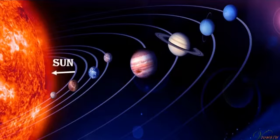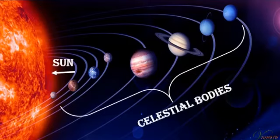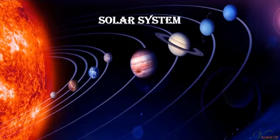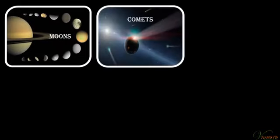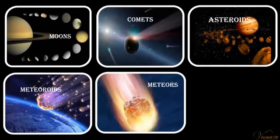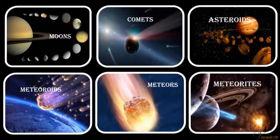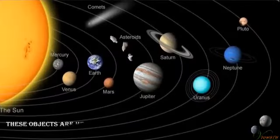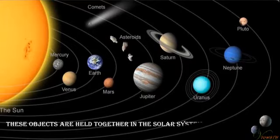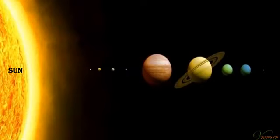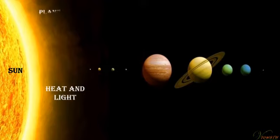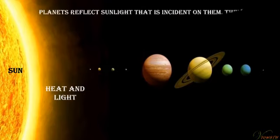The sun and the celestial bodies that revolve around it form the solar system. It comprises a large number of bodies like planets, their moons, comets, asteroids, meteors, and meteorites. These objects are held together in the solar system due to the sun's gravitational pull. The sun is a major source of heat and light for all the planets in the solar system. Planets reflect sunlight that is incident on them.